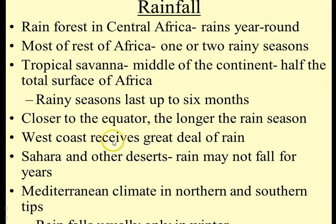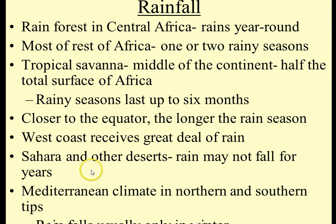Closer to the equator, the rainy season is longer. The west coast receives a lot of rain. The Sahara and other deserts may not get rainfall for many years — that's what makes it a desert. There's a Mediterranean climate at the northern and southern tips of the continent, where rain falls usually only in wintertime.